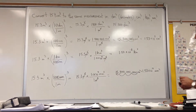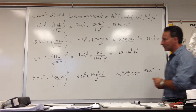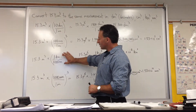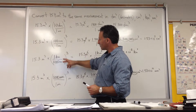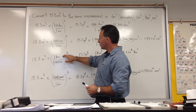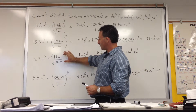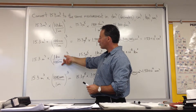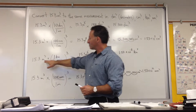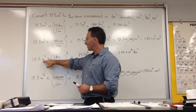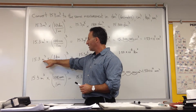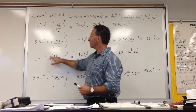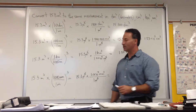The trick to getting the conversion factor correctly set up is to choose the right form. For example, kilometers to meters can be written as 1,000 meters per kilometer, with meters on top or bottom. The way you decide is by looking at what you're trying to get rid of. Since you're trying to eliminate meters in the initial figure, meters has to be in the denominator so it cancels with the meters in the other number.